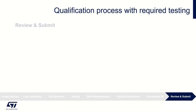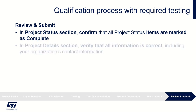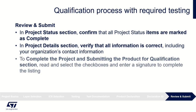This is the last step — review and submit. For the project status section, confirm that all project status items are marked as complete. For the project details section, verify that all information is correct including your organization's contact information. For the complete the project and submit for qualification section, read and select the checkboxes and enter a signature to complete the listing.